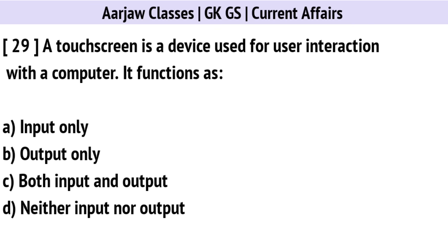A touchscreen is a device used for user interaction with a computer. It functions as? The correct option is C: Both Input and Output.